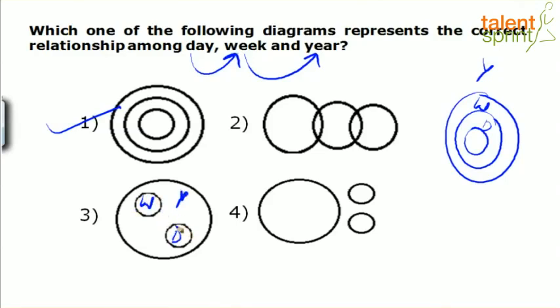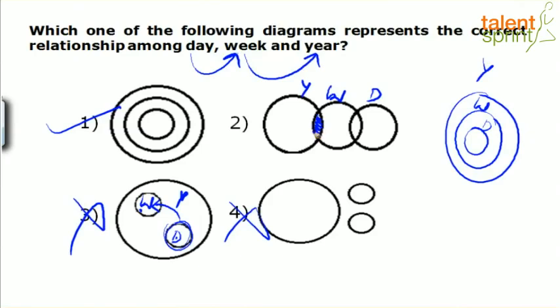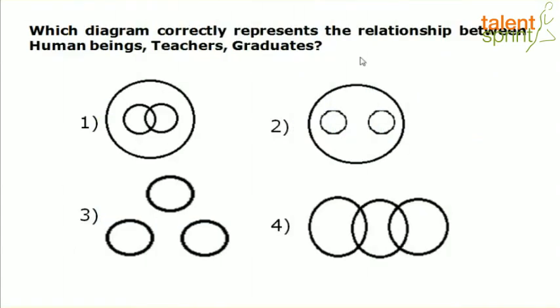Option 3 is wrong because every day is a part of week, so days should be completely inside weeks — not shown correctly there. Option 4 makes no sense because we cannot have disjoint sets for days, weeks and years; everything is correlated. Option 2 is eliminated because it shows only a little overlapping between years and weeks, but all weeks should be inside years. The correct answer is option 1.